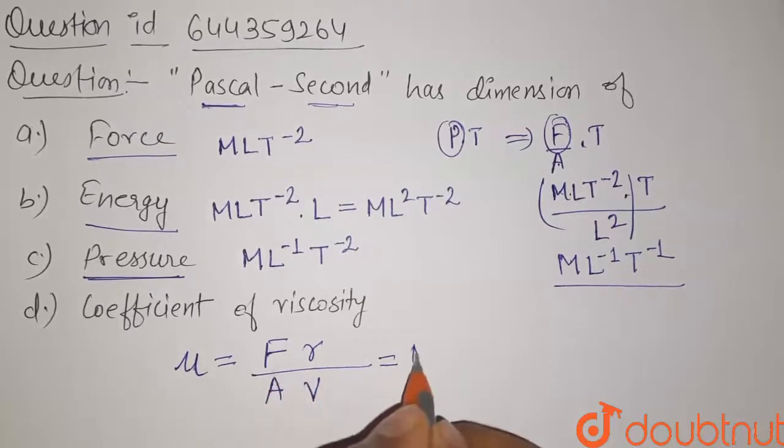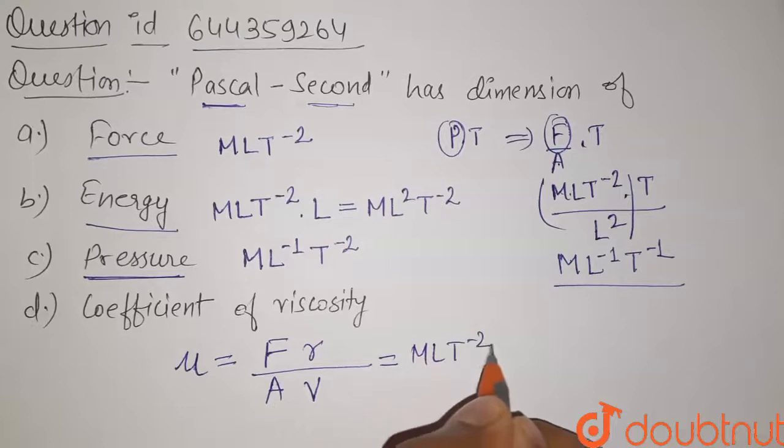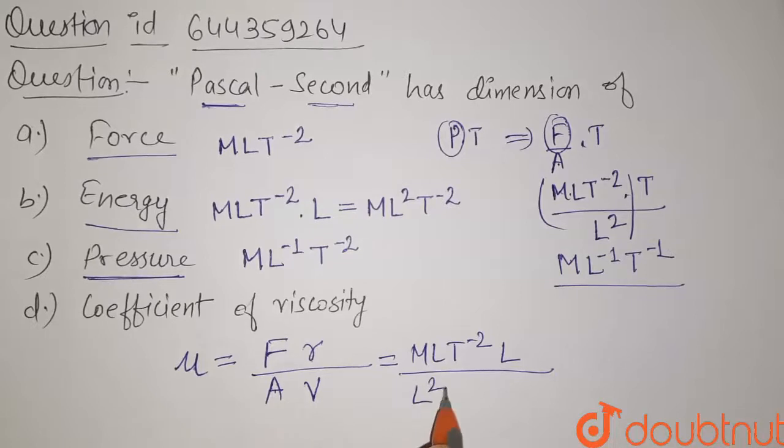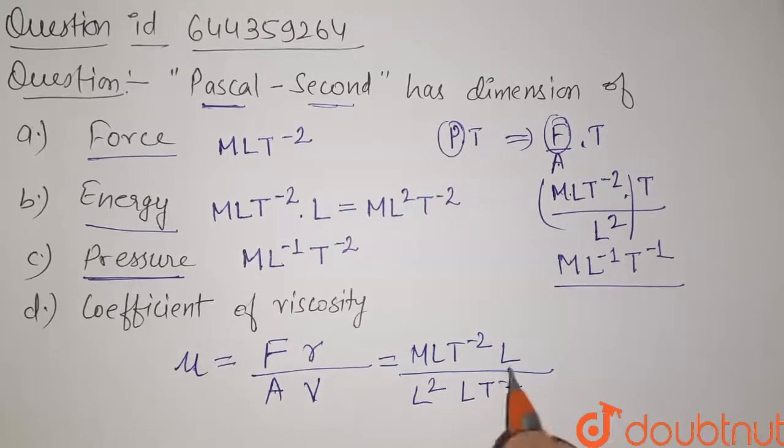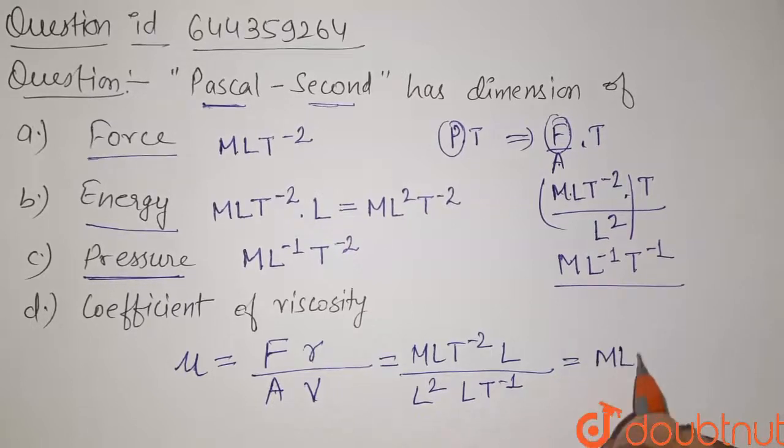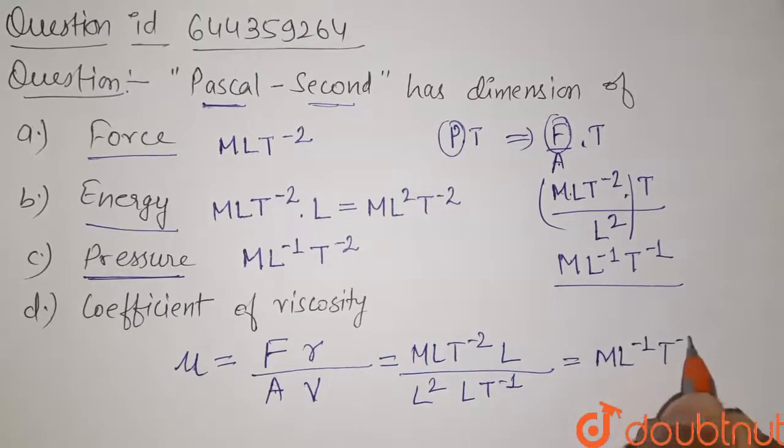The dimension for force is MLT^-2. For length it is L, divided by, for area it is L^2 and for velocity it is LT^-1. Now simplify it, so it will become ML^-1 and T^-1.